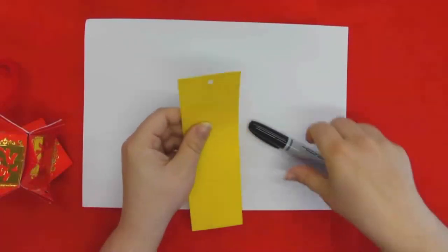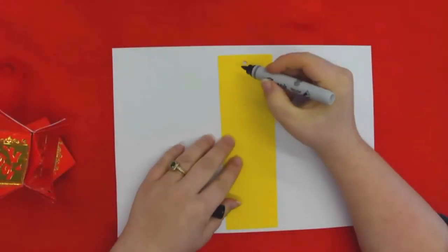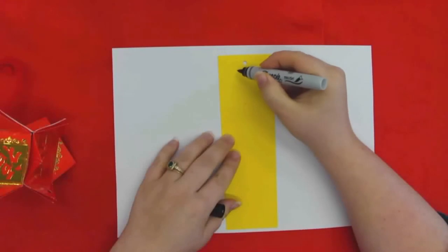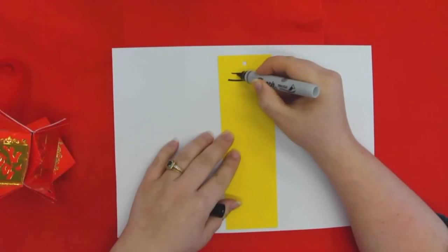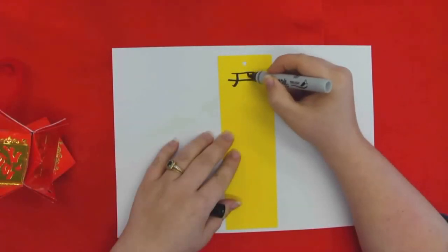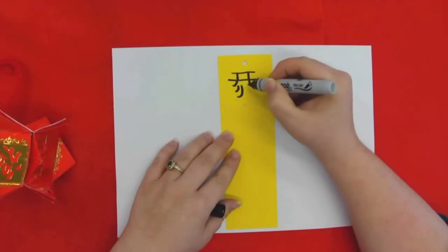And then we're going to take our marker and we are going to write Gong Hei Fat Chui in Cantonese. Try to break each letter down into simple shapes and lines. If you just look at it in these lines it's really not that difficult to replicate.